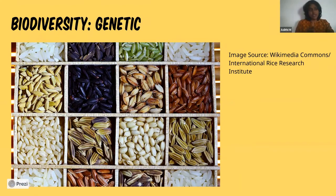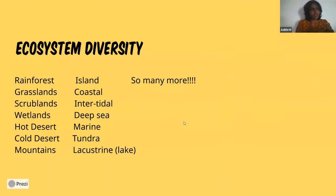Then there is ecosystem diversity, which talks about locations that share a certain set of topographical and geographical features, giving them special characteristics that harbour certain types of life. This is the kind of diversity I'll be talking about — particularly ecosystem diversity and species diversity.